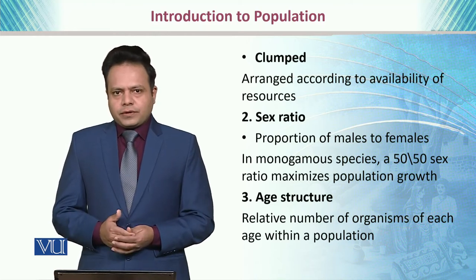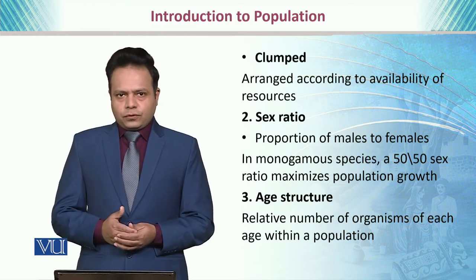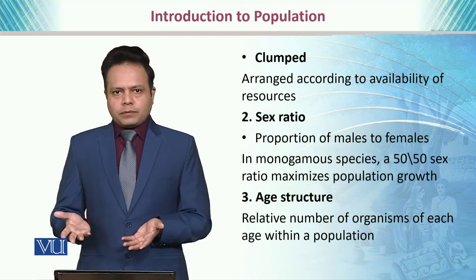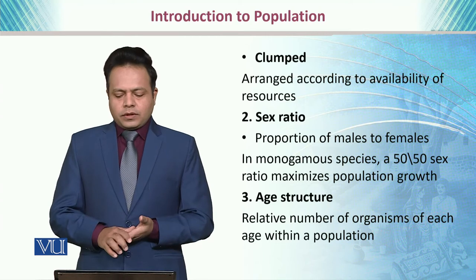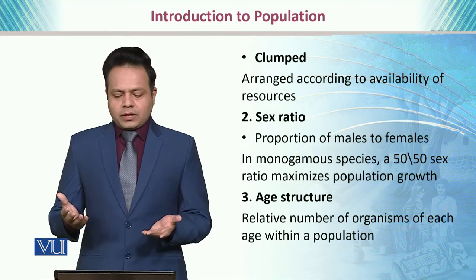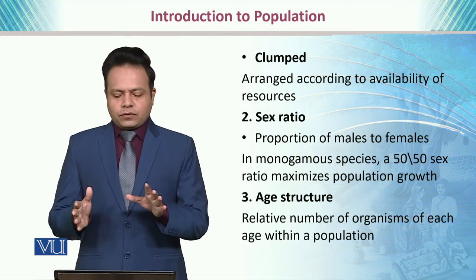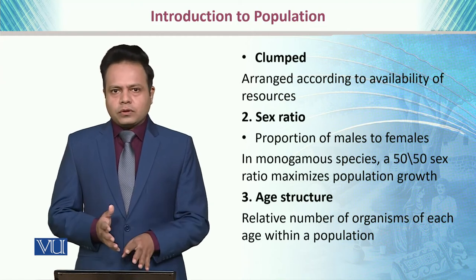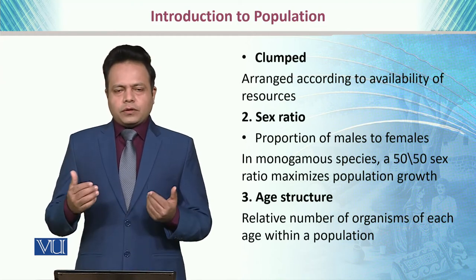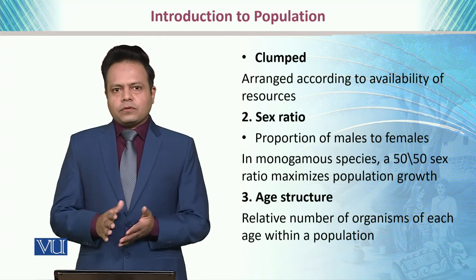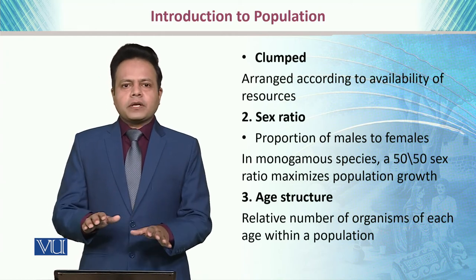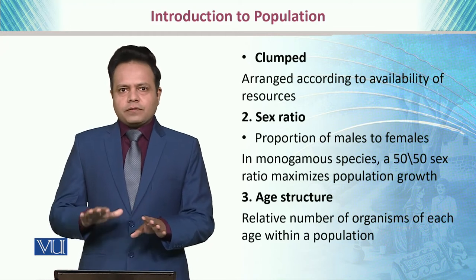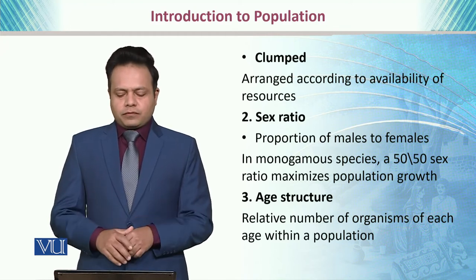We also have to understand the sex ratio, which means the proportion of males to the number of females. In monogamous species, a 50-50 sex ratio maximizes population growth. In human beings as well, it is considered a perfectly harmonious or balanced population where this 50-50 ratio is achieved.